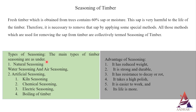Types of seasoning. The main types of timber seasoning are as follows. Number one: natural seasoning, which includes water seasoning and air seasoning. Number two: artificial seasoning, which includes kiln seasoning, chemical seasoning, electric seasoning, and boiling of timber.